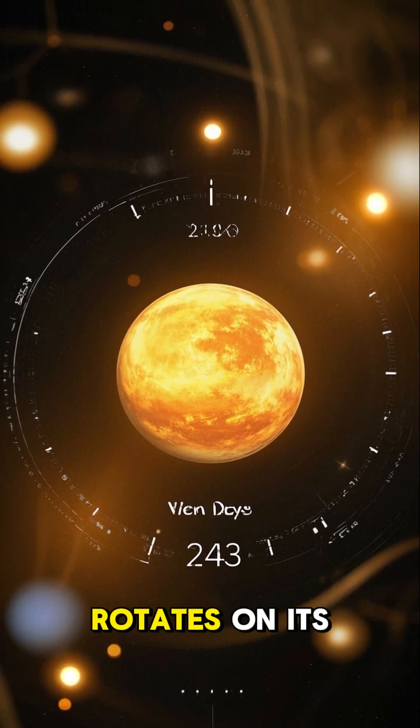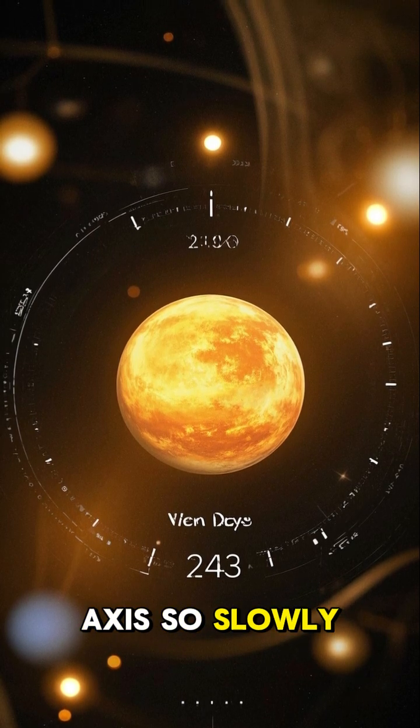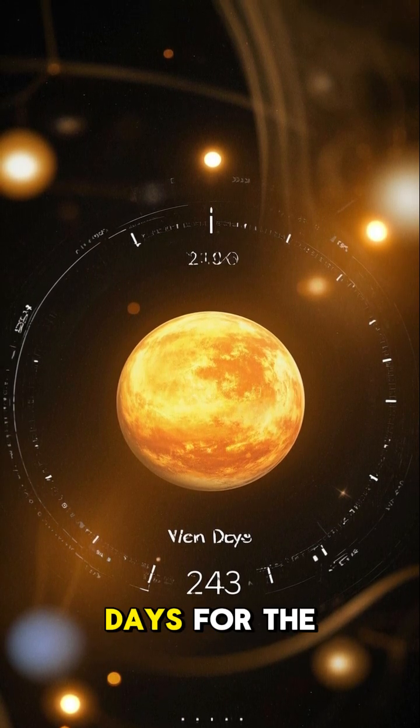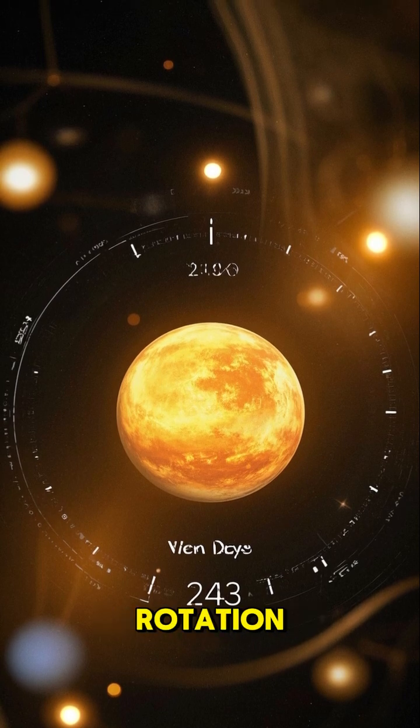Number four, Venus rotates on its axis so slowly that it takes 243 days for the planet to complete one rotation.